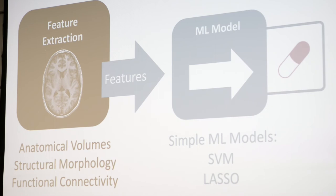If you look at the literature, the models being used are actually really straightforward and simple — things like SVM and Lasso. We're not getting into deeper architectures, and again this loops back to the fact that we really don't have that much data to work with. This data is hard to come by, it's hard to run these big studies, so we're restricted in the complexity of the models we can use.